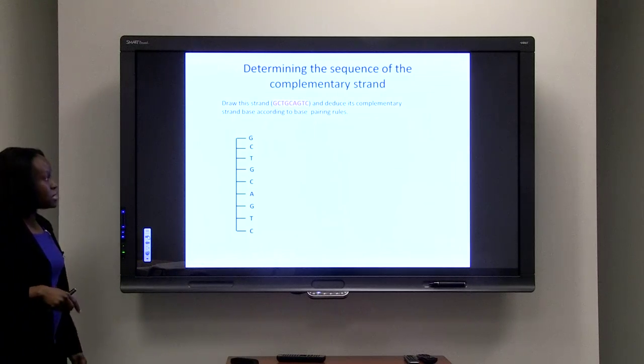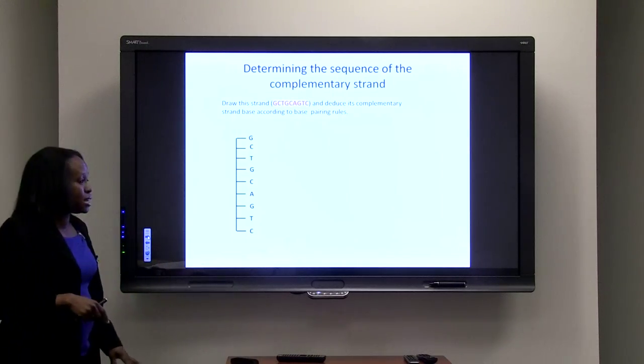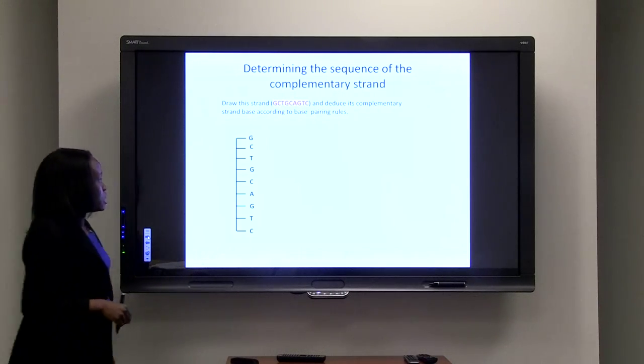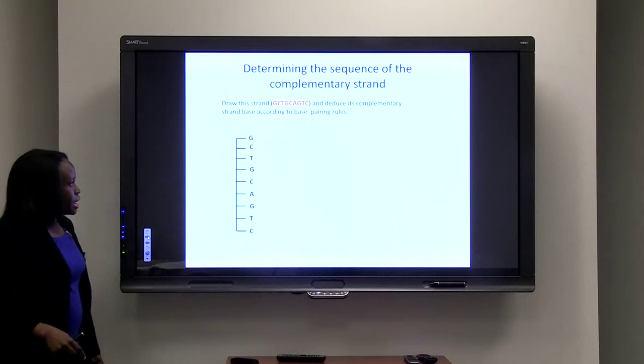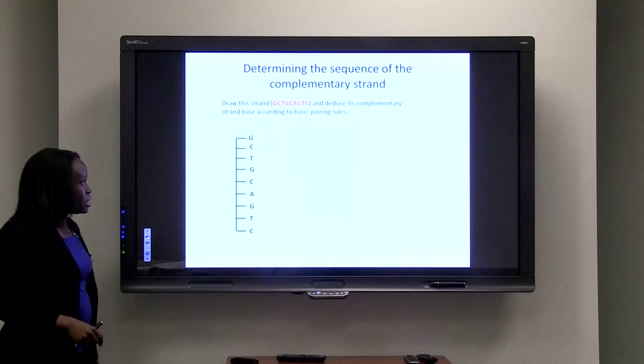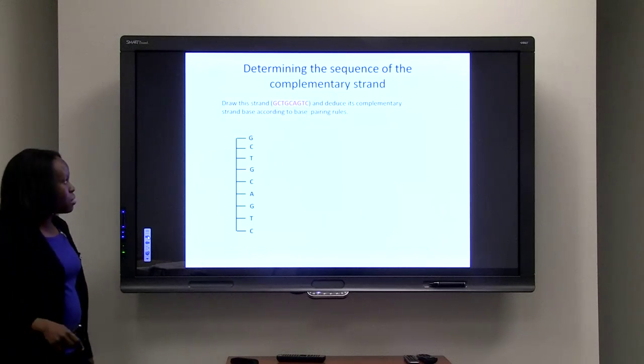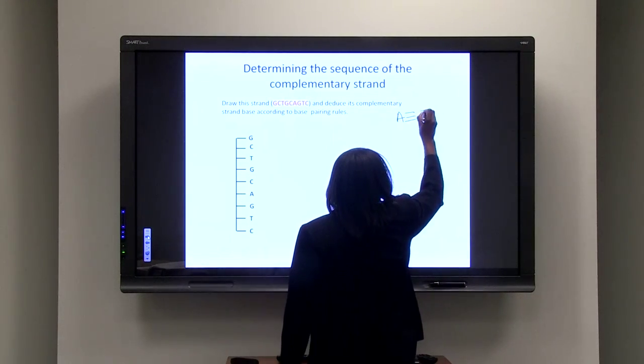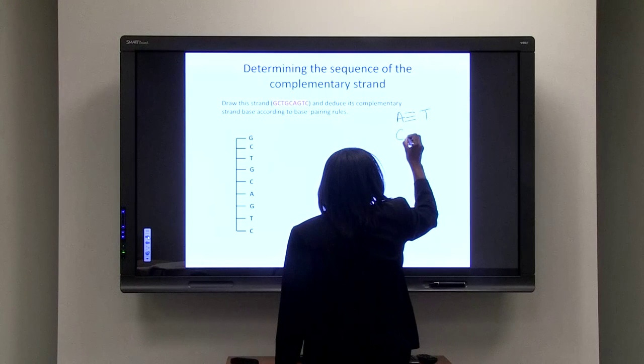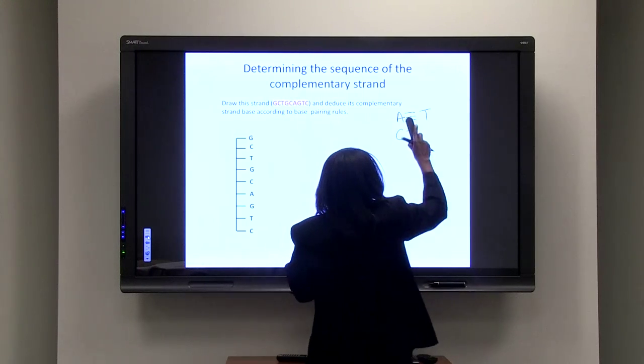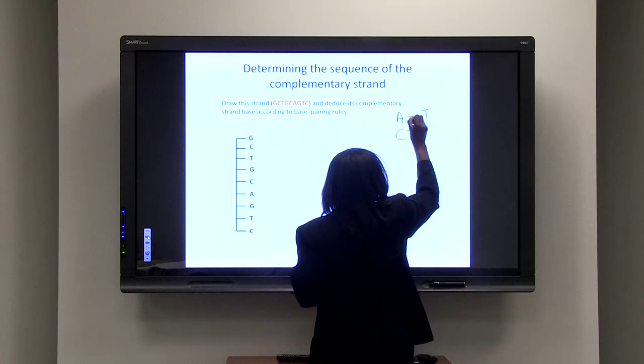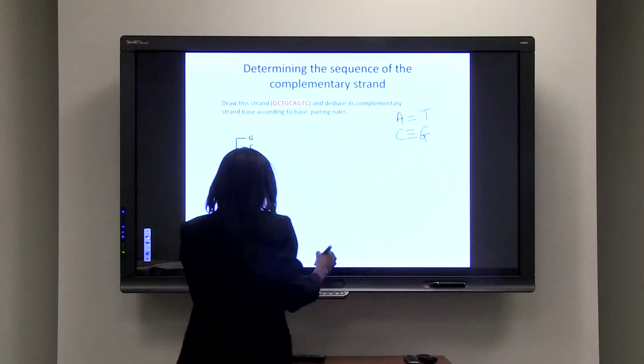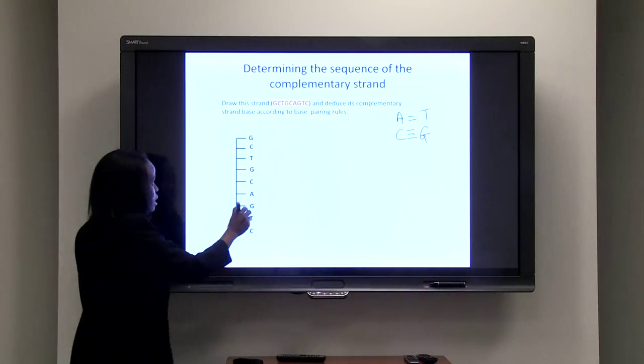So, another thing that is important about the structure of DNA is that the strands that make up the DNA molecule are complementary to each other. So, if you were given this strand, for example, and they asked you to find the complementary strand to it that would make the resulting DNA molecule, you have to know your rules. So, you know that adenine pairs with thymine and cytosine pairs with guanine. Adenine pairs with thymine, two hydrogen bonds, and cytosine forms three hydrogen bonds with guanine. So, based on our base pairing rule, we can determine what the other strand is.